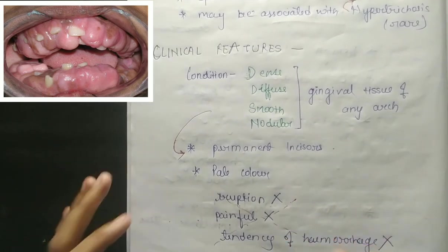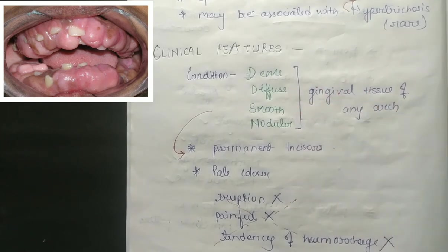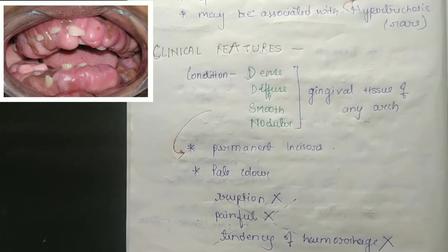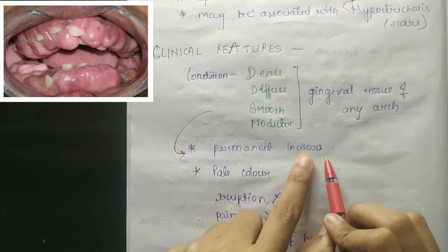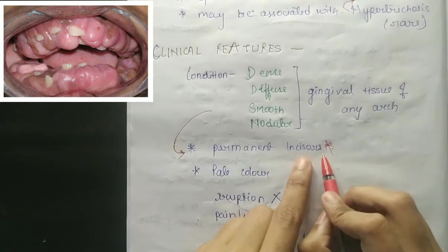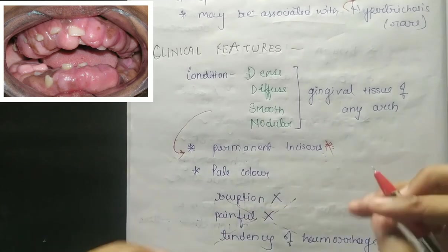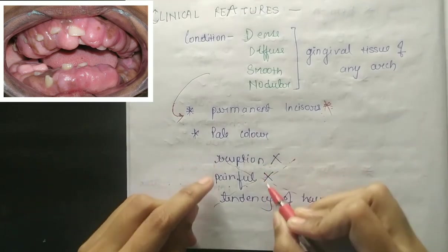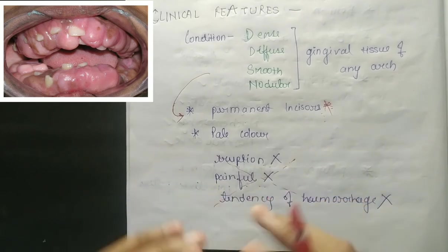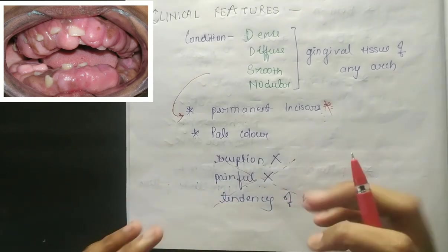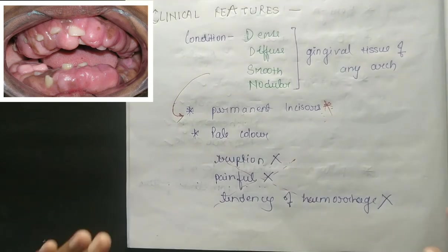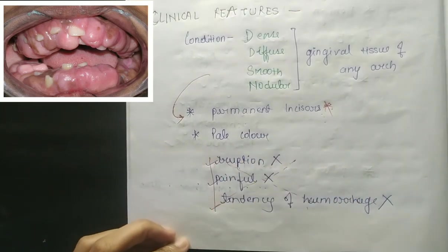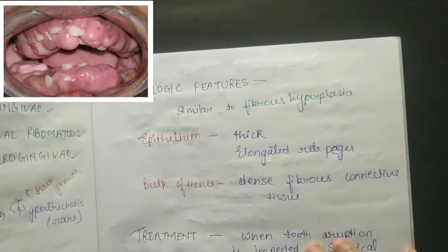Regarding clinical aspects, you can see dense, diffuse, smooth plus nodular gingival tissue. The most commonly affected tooth is the permanent incisors. The color is pale. Importantly, eruption is not delayed, it is not painful, it is asymptomatic, and there is no tendency of hemorrhage.